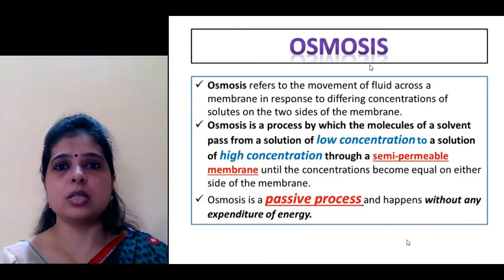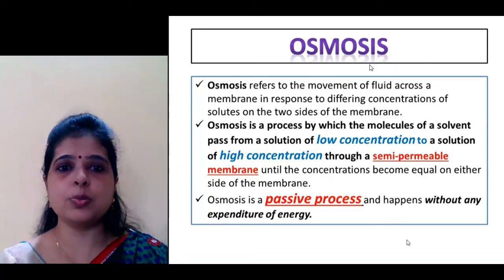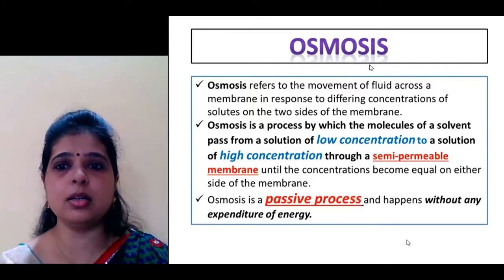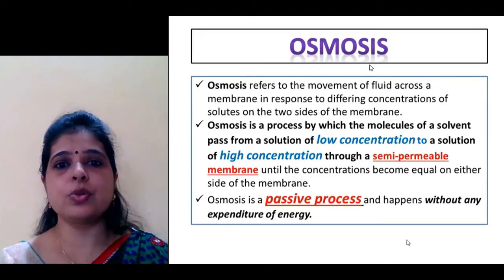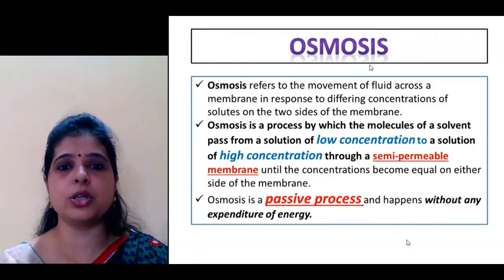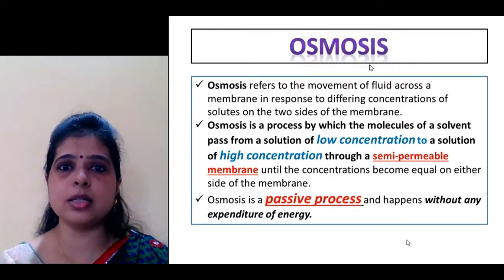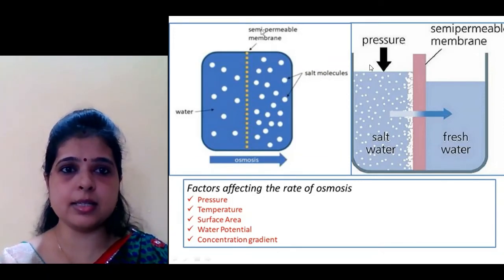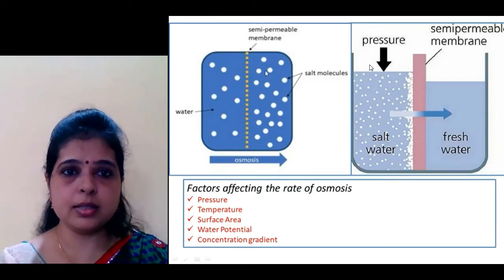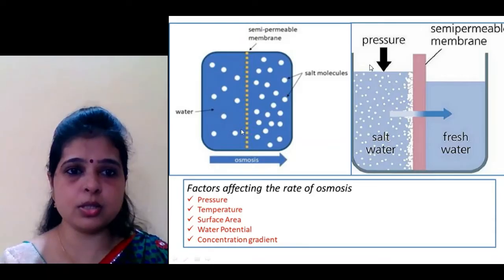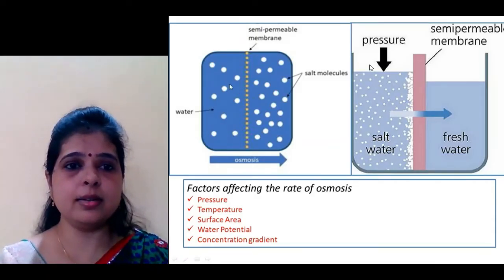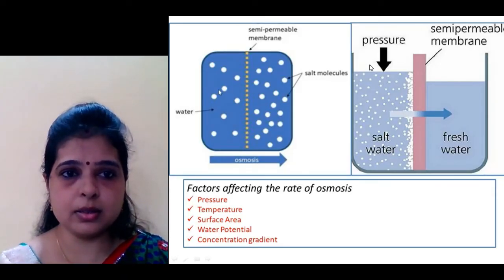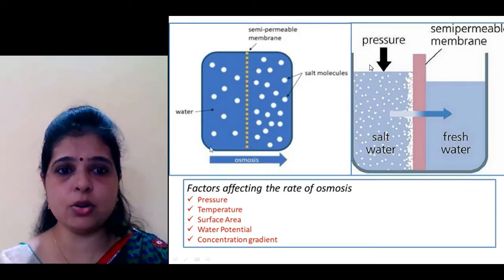Now, the osmosis process. What is osmosis? Osmosis is a passive process which results in the passing of solvent from lower concentration to higher concentration of solute through a semi-permeable membrane. It is a passive process, so it results in no expenditure of energy. You can understand it this way: there is a semi-permeable membrane. The white dots show the high concentration of salt on one side and the low concentration of salt on the other side. So eventually, the solvent will pass from the low-concentration side to the high-concentration side. That is the normal osmosis process.